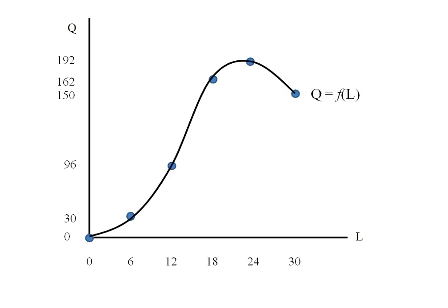If we connect the dots this would be our production function. In this case we have a single input labor giving us our output. This is a pretty typical shape for a production function where first it increases as our input increases and then our output decreases as our input increases.